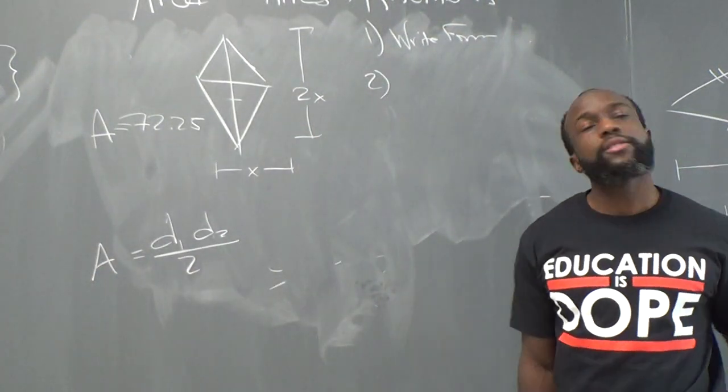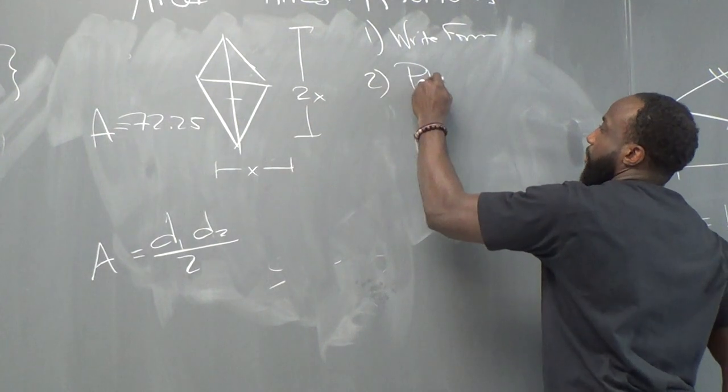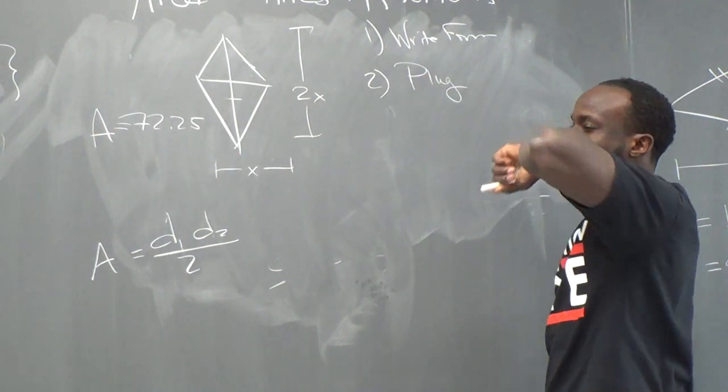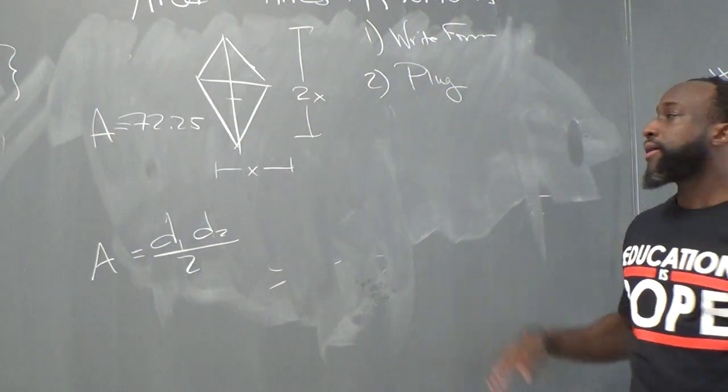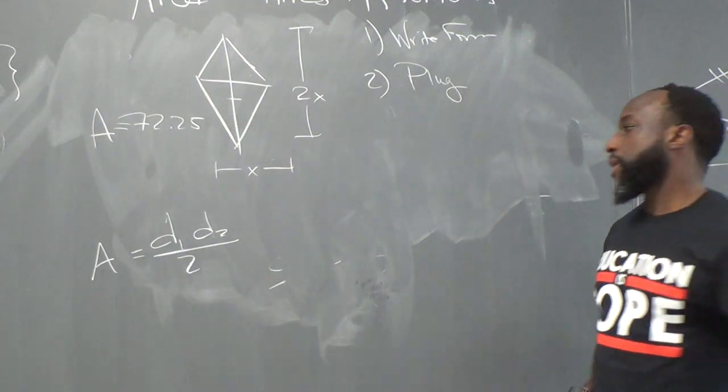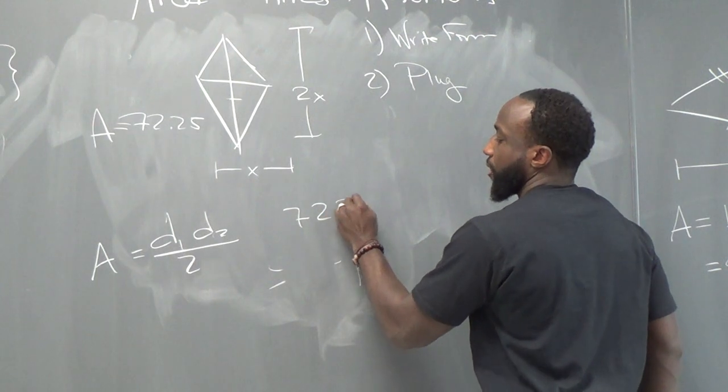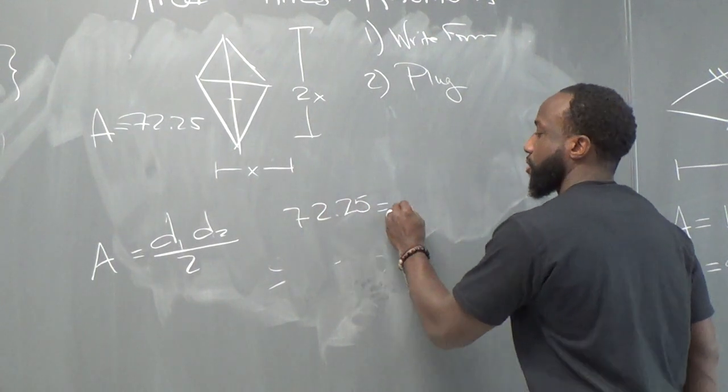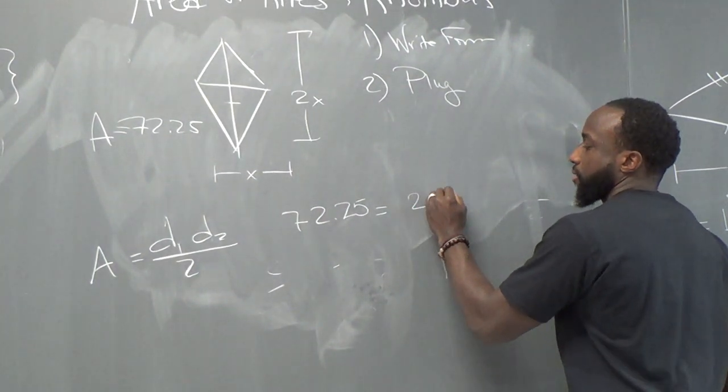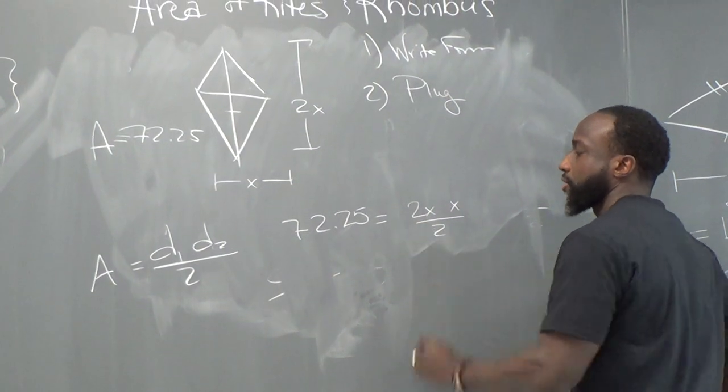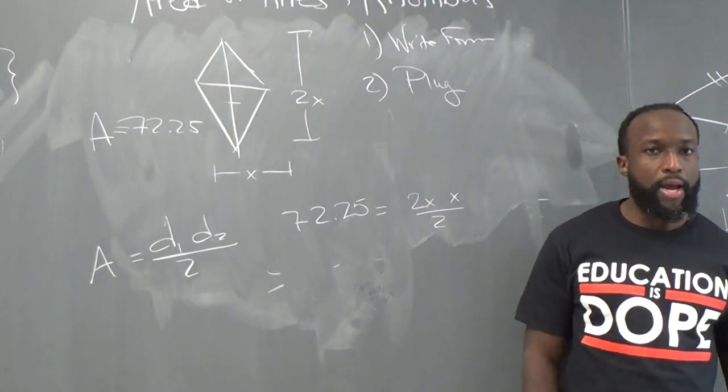The formula is D1 times D2 over 2 equals area. Alright? What's the next thing you want to do? Plug it in. Substitute. Right. Plug it in. My dad, he was a bio teacher too. He would say plug and chug. Right? Plug it and then work it out. Alright? So we're given the area. 72.25 equals 2x times x over 2.